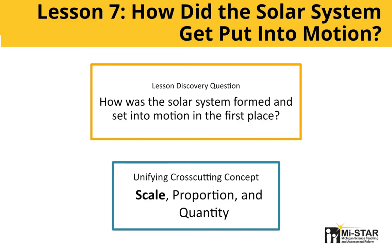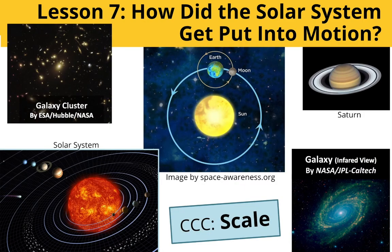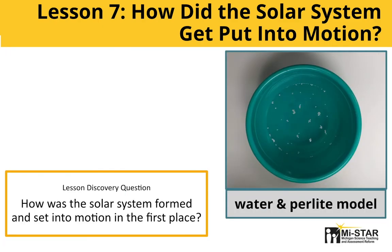Students begin Lesson 7 by looking for patterns of scale — the first unifying cross-cutting concept for eighth grade. Students look into the motion and shape of several space phenomena. Do you see similarities in the shapes of these images? Students also determine that revolving objects need some initial force to put them in motion. In the second uncover-share, using perlite and water in a bowl, they test a variety of initial forces to observe the results, then compare their observations to a widely accepted scientific theory about the formation of the solar system called nebular theory. In the connect phase, students use a video featuring Neil deGrasse Tyson to generate a claim, evidence, and reasoning for the origin and formation of the asteroid that is threatening Earth.